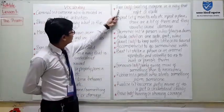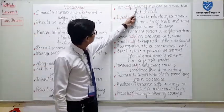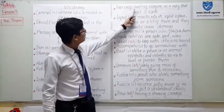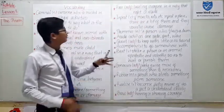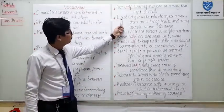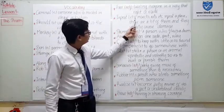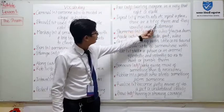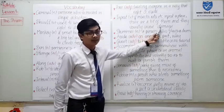Next word is 'fair.' Fair. Function: adjective. Meaning: treating everyone in a way that is right or equal — making something equal, the same, and the right way. Next word is 'infest.' Infest. Function: verb. Meaning: if insects or animals infest a place, there are a lot of them and they usually cause damage.